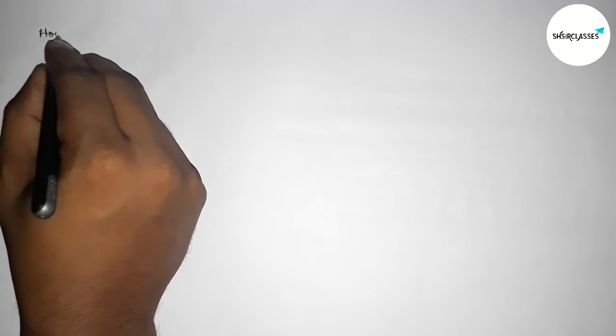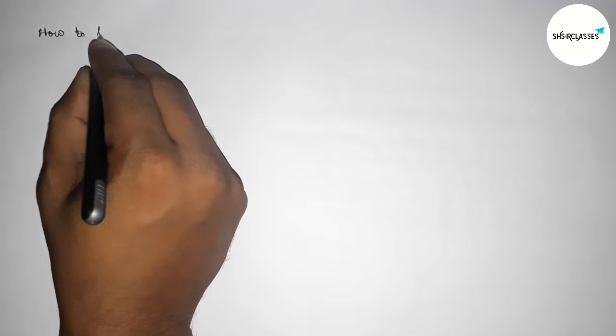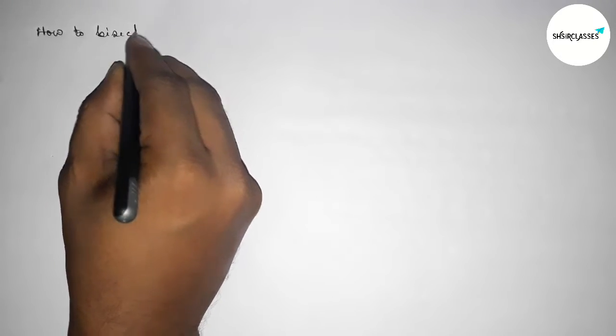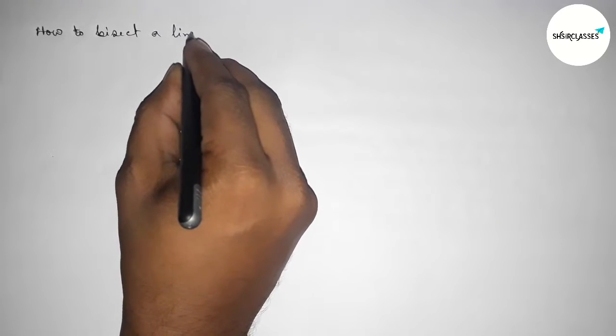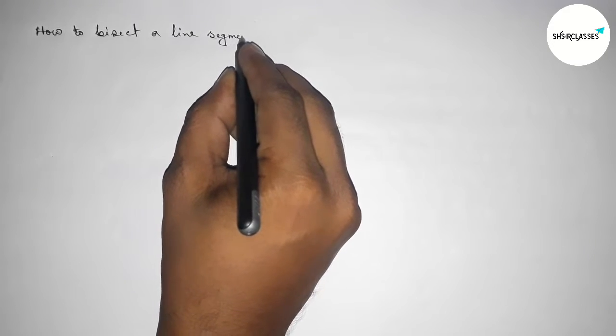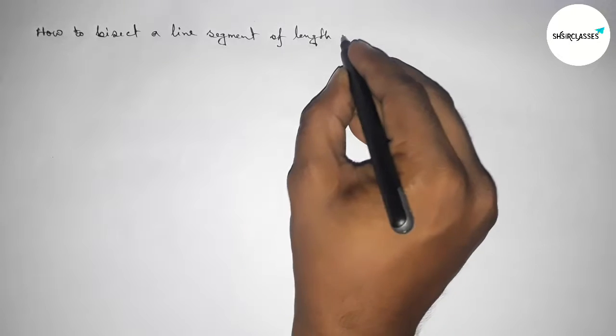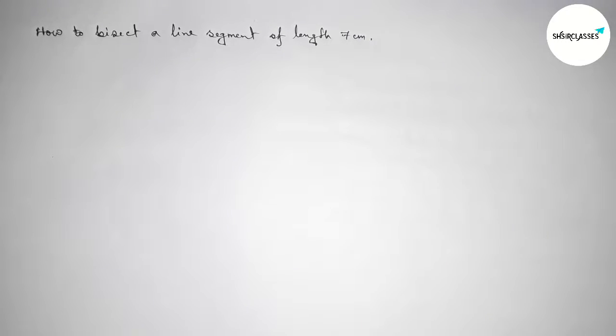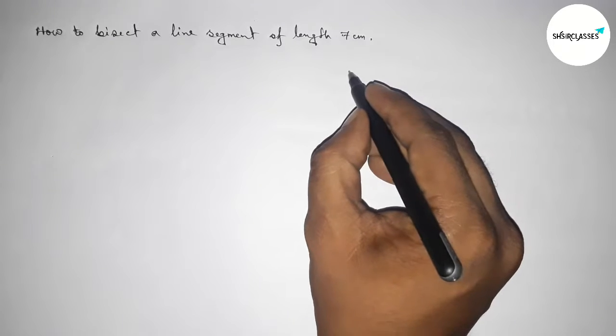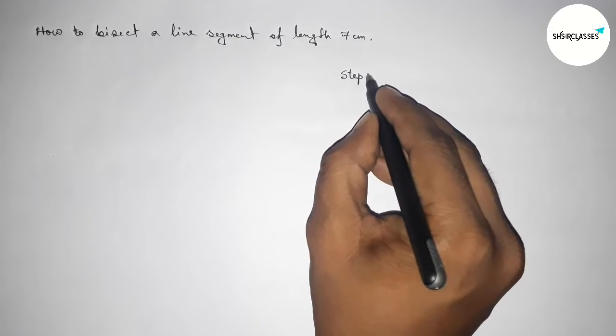Hi everyone, welcome to essay share classes. Today in this video, we're discussing how to bisect a line segment of length 7 centimeters using a compass. So let's start the video. First of all, leaving here some space to write steps of construction.